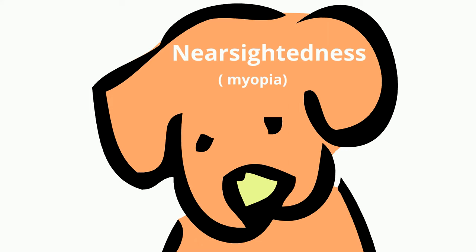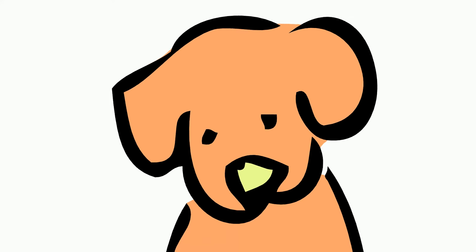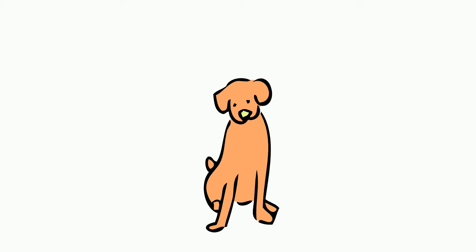Nearsightedness, also called myopia, is when people can see nearby objects clearly. However, objects that are far away appear blurry and not in focus.